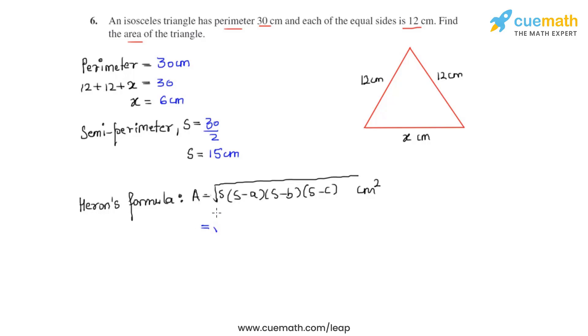As we know all these values already, let's plug them in and we get under root 15 times 15 minus 12 times 15 minus 12 times 15 minus 6.